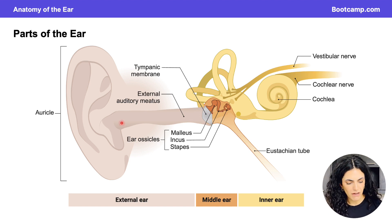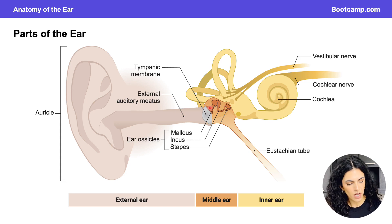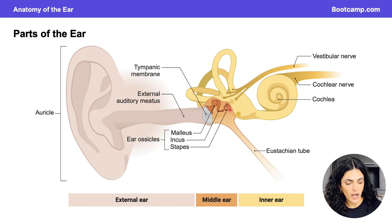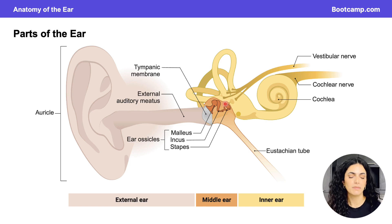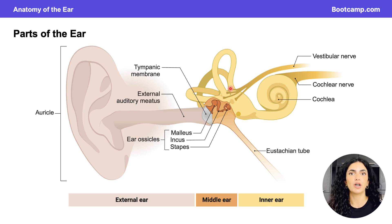As sound waves travel through the external acoustic meatus, they cause the tympanic membrane to vibrate. Within the middle ear, we have the auditory ossicles — very small bones that contact the tympanic membrane. When the tympanic membrane vibrates, the ossicles transmit that mechanical information into the inner ear, where we find the cochlear and vestibular apparatus containing nerves responsible for transmitting electrical signals to the brain for hearing and balance.